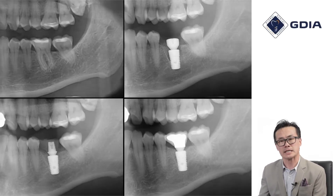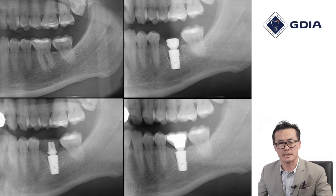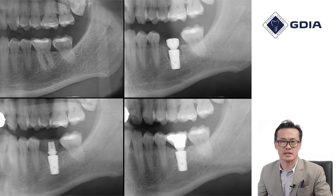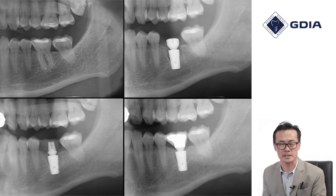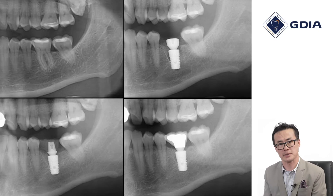If you look at a case like this, we have a series of panoramic radiographs laid on top of each other. You can see the consistency of the images because of the very nature that the patient is placed in the same spot with the same jaw position each and every time. Now this may not be true for the periapical radiograph.